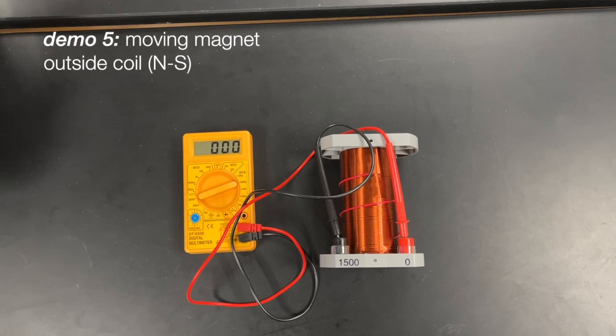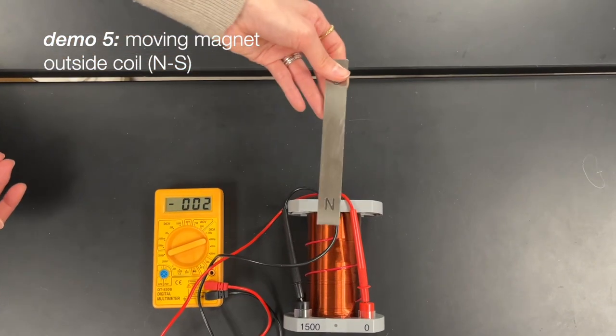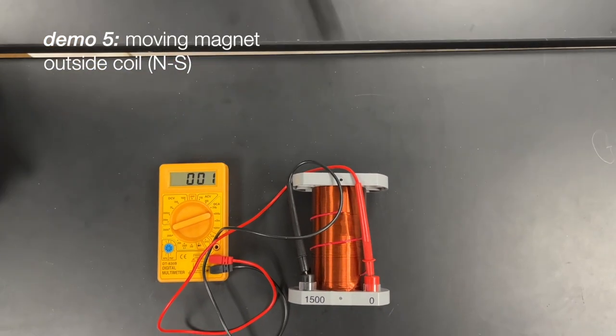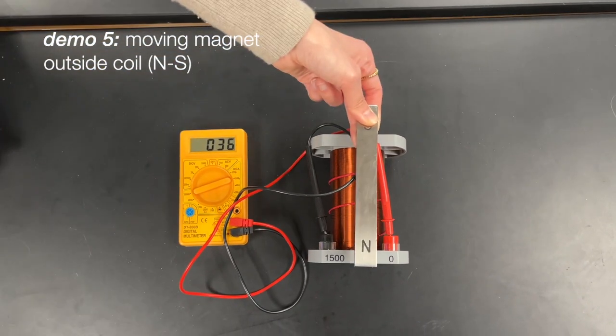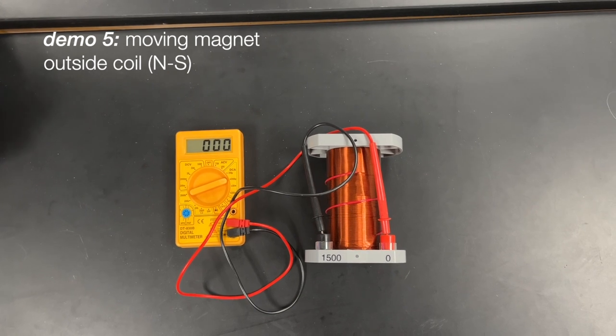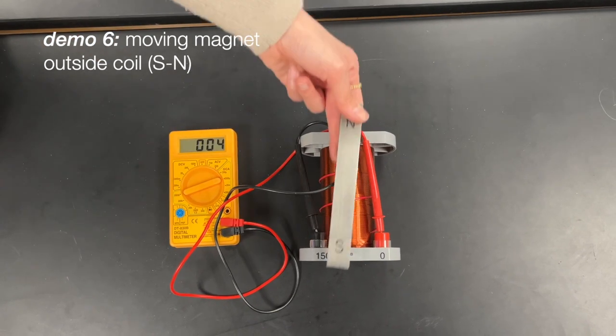What about outside of the coil? I'm going to move it outside with north facing it. So here's towards and away, towards and away. And let's do south now - towards and away, towards and away.